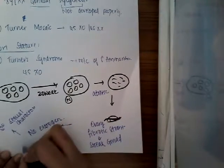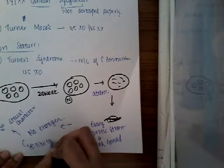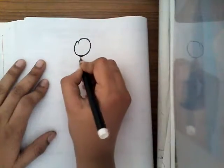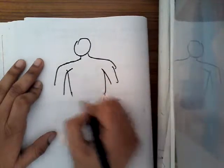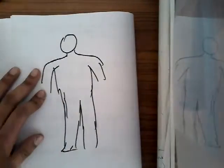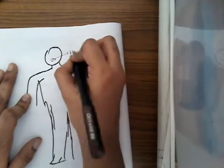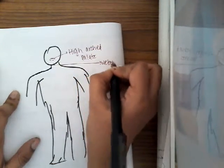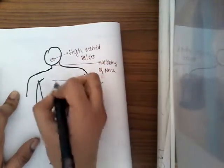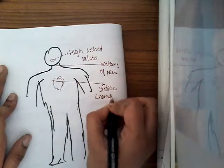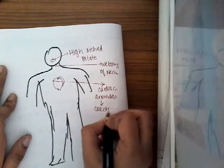Because there is no estrogen, there are no secondary sexual characters. And because there is no estrogen, this will activate the pituitary and there is increased FSH. Now, what are the clinical features? The child may have high arched palate, webbing of the neck, and cardiac anomalies. Most commonly there is coarctation of the aorta — this is important.